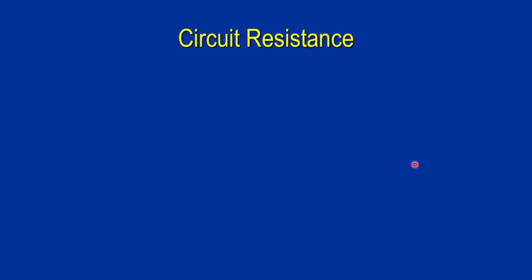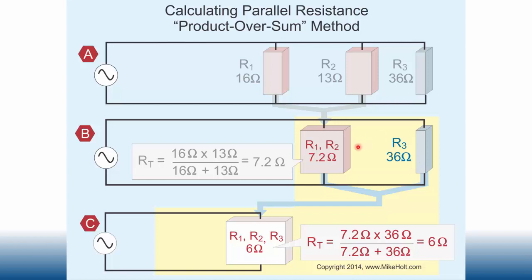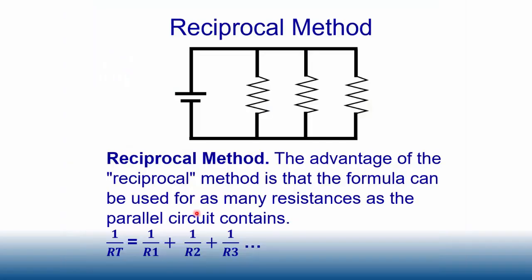For the third resistor, we take our calculated 7.2 ohms from the first two and apply product over sum again with the third resistor at 36 ohms: 7.2 times 36 equals 259.2, divided by 7.2 plus 36 which is 43.2, giving 259.2 divided by 43.2 equals 6 ohms total resistance. So we work through two resistors at a time.